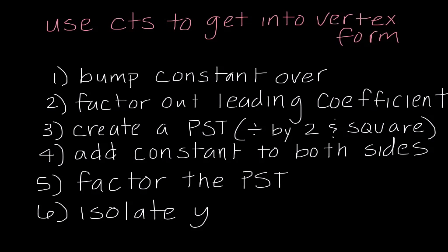Then, finally, our last two steps: we factor the perfect square trinomial, and then we isolate y. These are really the steps we go through to get any function into vertex form, and it's a lot easier to see when we have an actual equation in front of us.